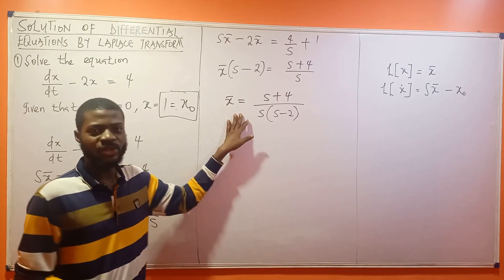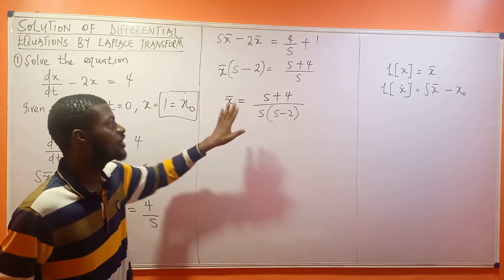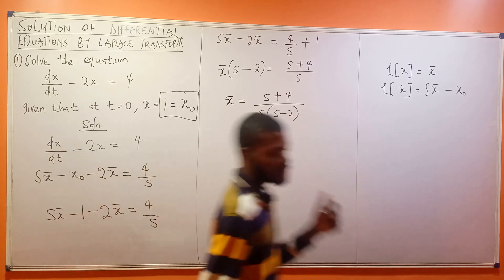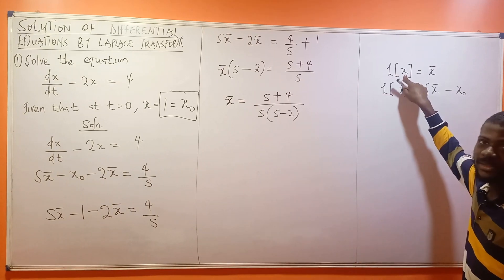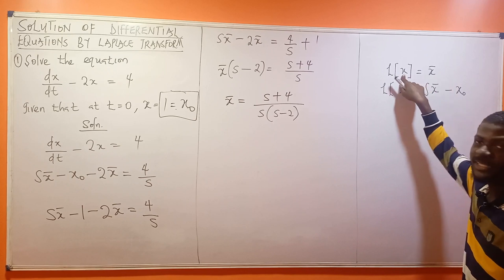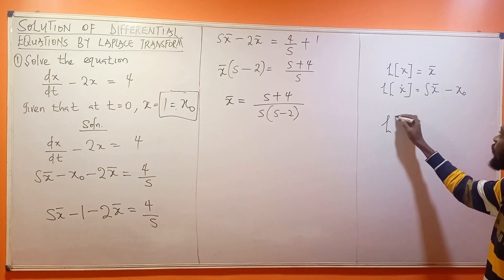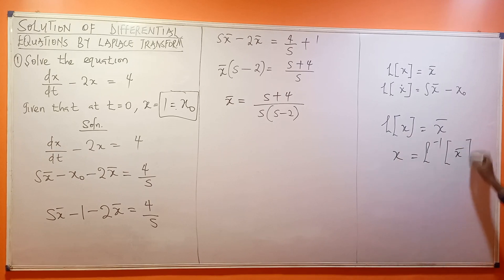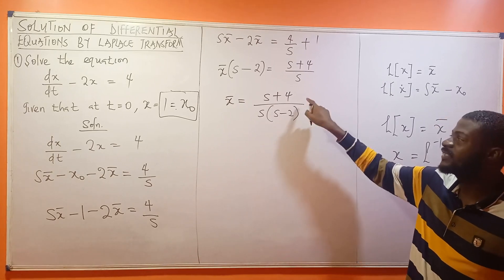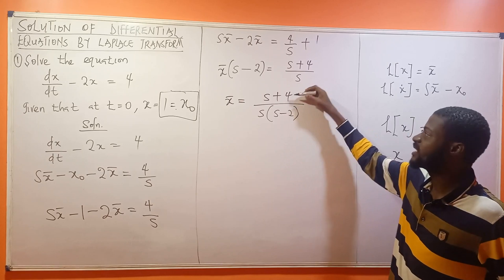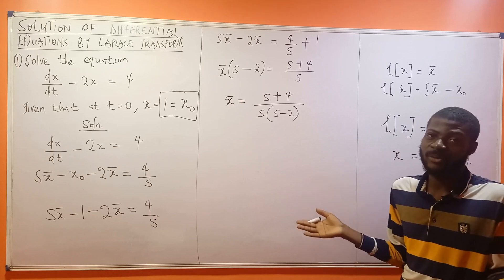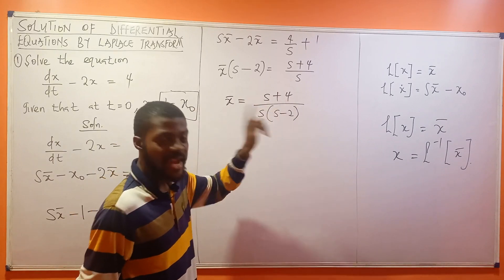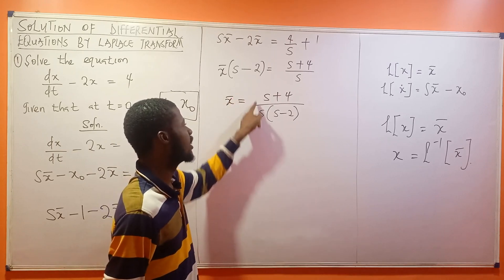Now what have we done? We have written everything in terms of the transform. To get our solution, we find the inverse Laplace transform. The Laplace transform of S gives S bar, so to find S we take the inverse Laplace of S bar. Right now this expression doesn't match any standard transform form, so it's not convenient to convert it directly. Therefore, we write it in partial fractions first.